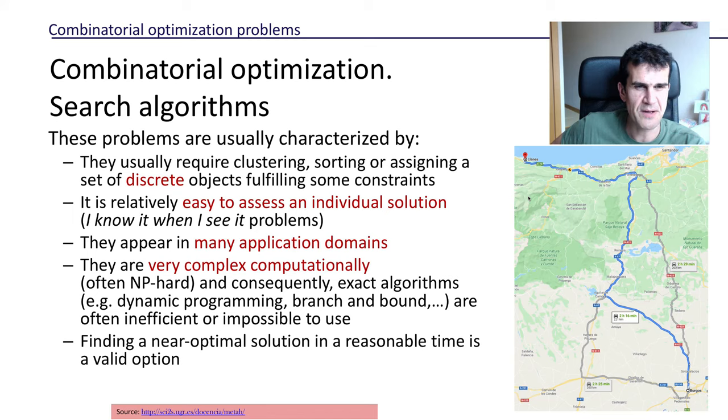As we've seen, they appear in many different domains of application, and usually they're very complex computationally. The complexity comes usually because the space of possible solutions is huge, and this means that using exact algorithms or even exhaustive search is completely unfeasible. We cannot do that; it would take far too long.